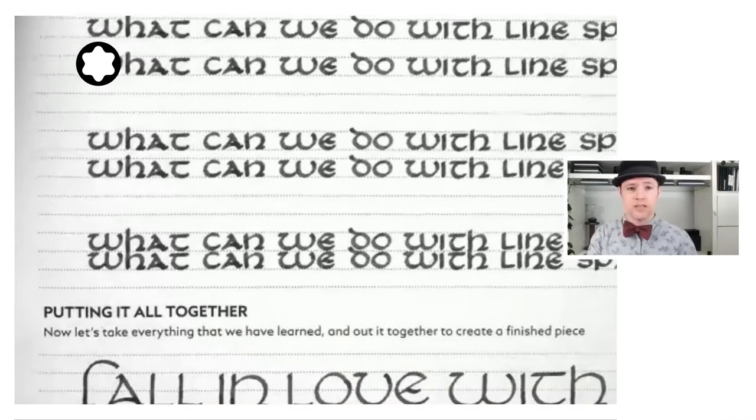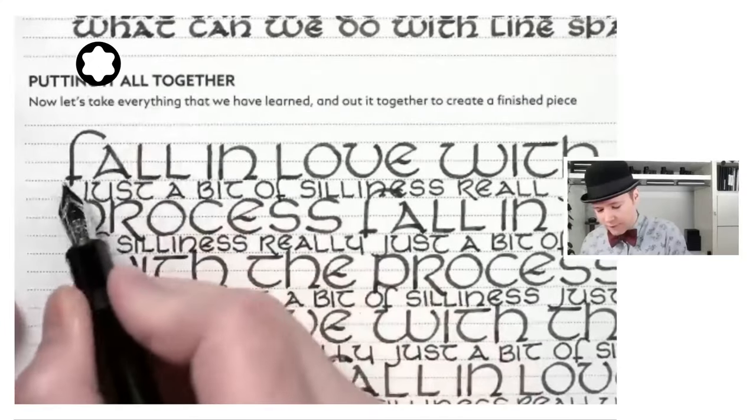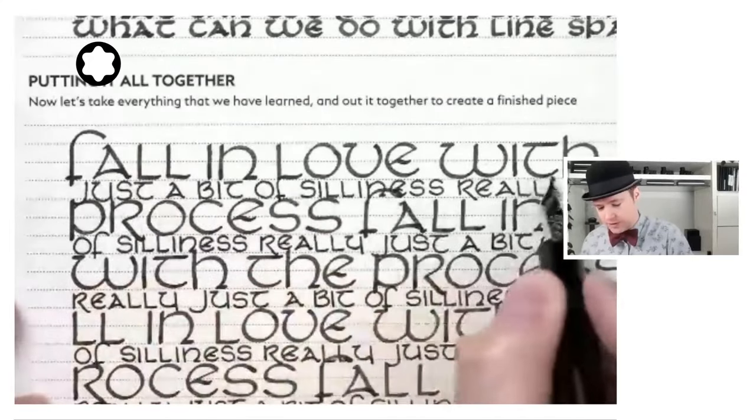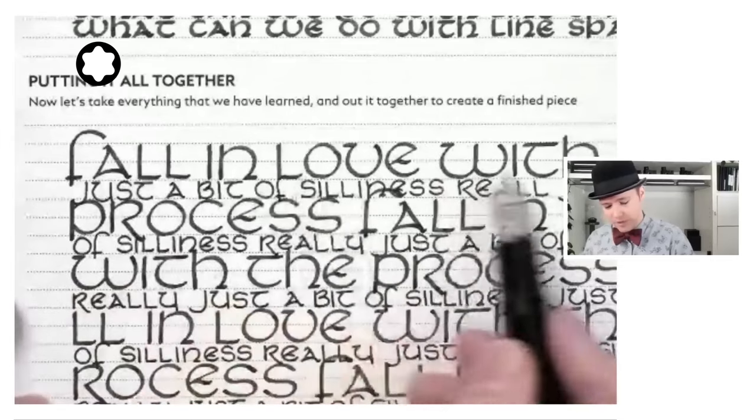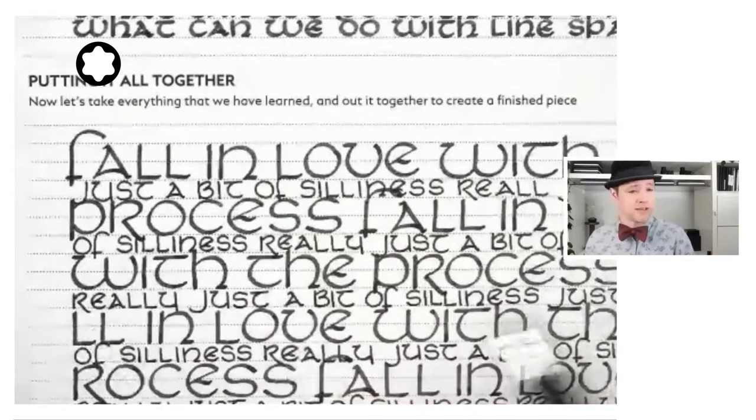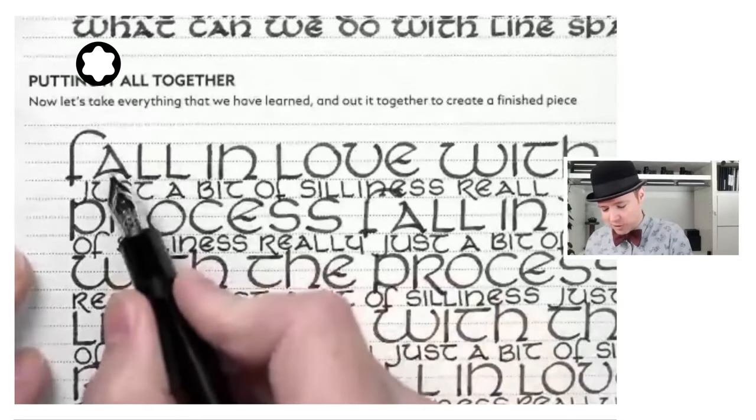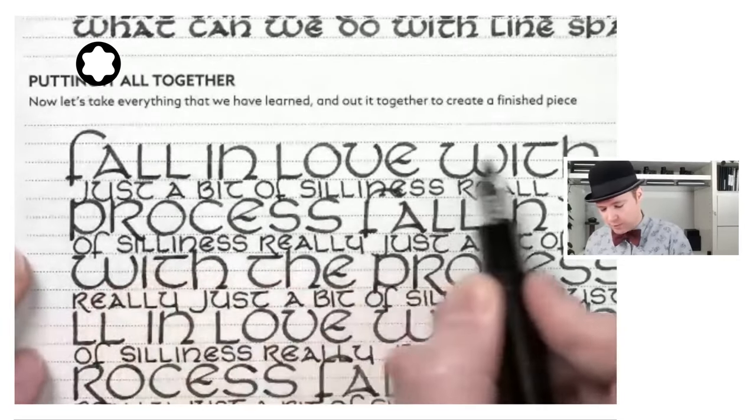And that is using two different pens. A first line of text, you can see here we have fall in love with the process. And that's just over and over, fall in love with the process, over and over again. We have there, so this is double spaced, tall letters, fall in love with the process.